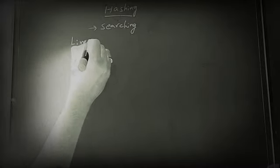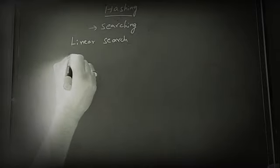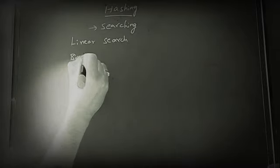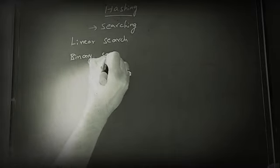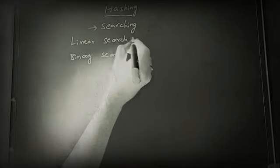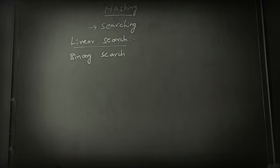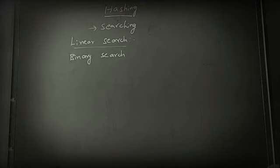One is linear search, and another is binary search. Linear search is a method to search the element in sequential form, from the starting position to the ending position, until we find the element or key in the list.